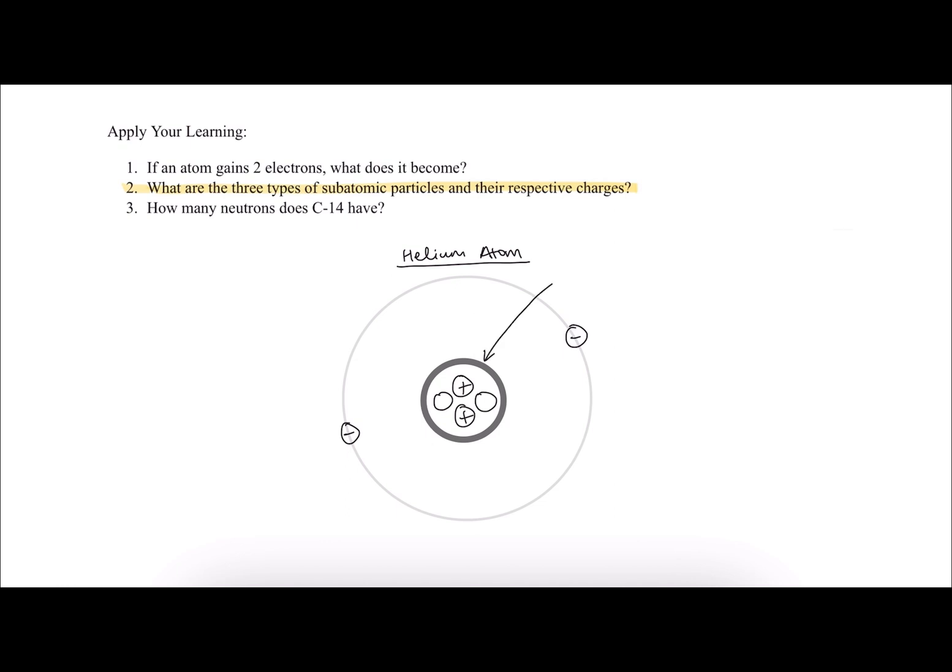First we have the nucleus in the middle, it's the most densely packed location inside of the atom. We also have this surrounding orbital, which is basically a path that subatomic particles will rotate around the nucleus.